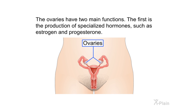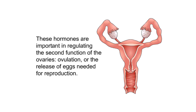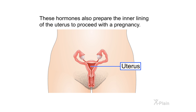The ovaries have two main functions. The first is the production of specialized hormones such as estrogen and progesterone. These hormones are important in regulating the second function of the ovaries — ovulation, or the release of eggs needed for reproduction. These hormones also prepare the inner lining of the uterus to proceed with a pregnancy.